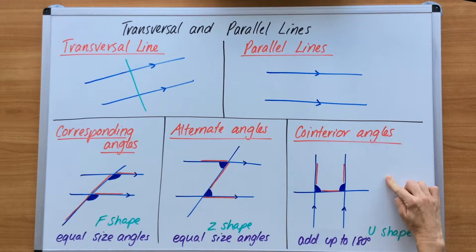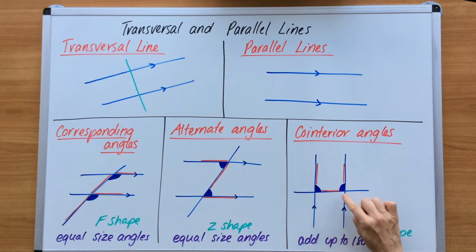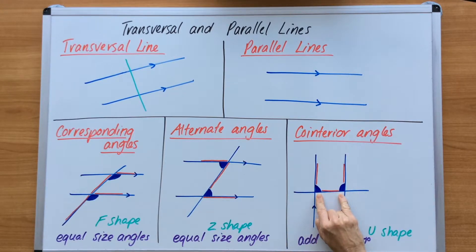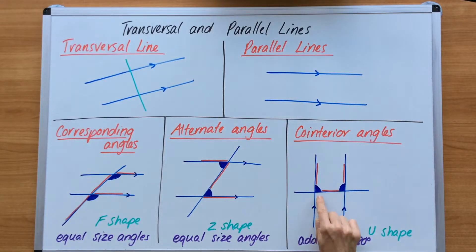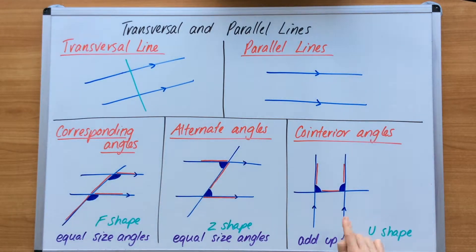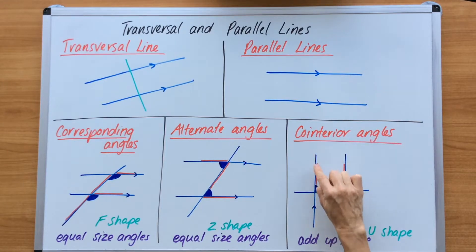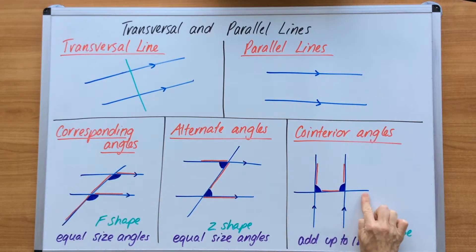Over here we have co-interior angles. This is our U shape angle. We have a transversal line and both of those angles sit on the transversal line, tucked into the parallel lines. These angles both add up to 180 degrees, so they will be different sized angles. We've got our U shape, our two angles tucked inside, sitting on the transversal. So they are the U shape and add up to 180 degrees.